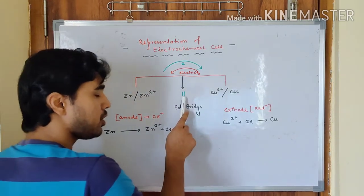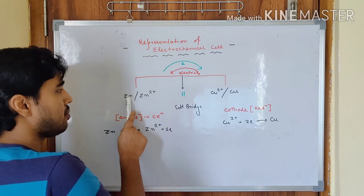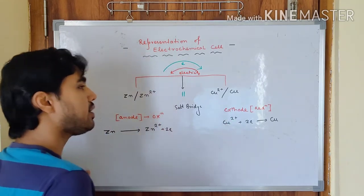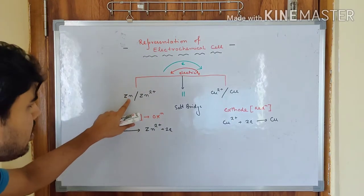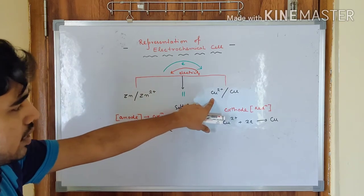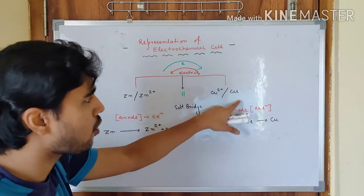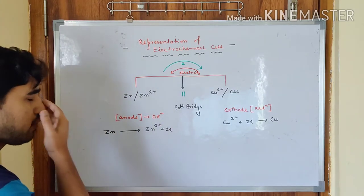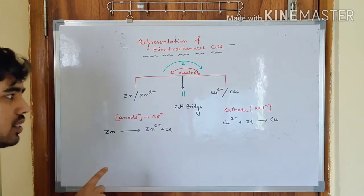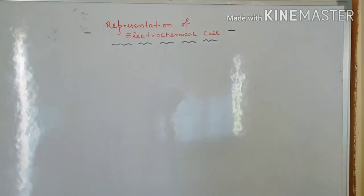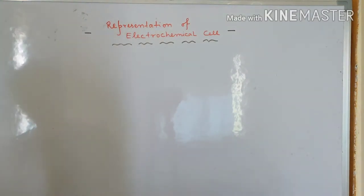So this is how the electrochemical cell should be represented - just a quick reminder: salt bridge should be in between, anode should be on the left-hand side, cathode should be on the right-hand side. The metal followed by the electrolyte on the anode side, and on the cathode side the electrolyte followed by the metal. Based on that, we are going to choose some cells and write them down. Now we are going to see the representation of some common electrochemical cells.